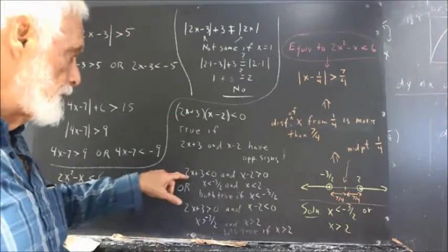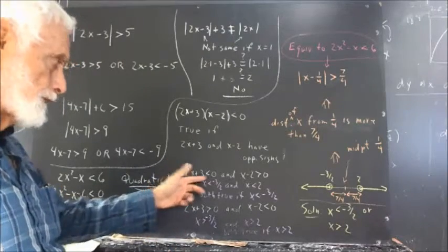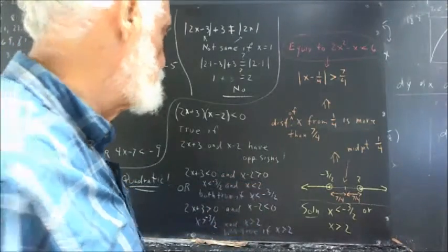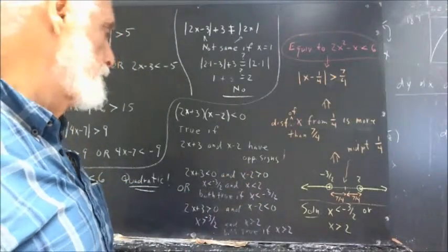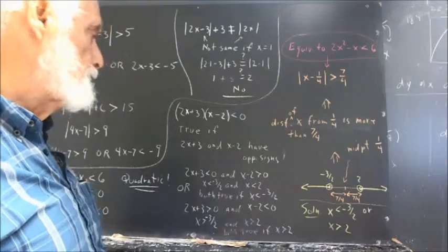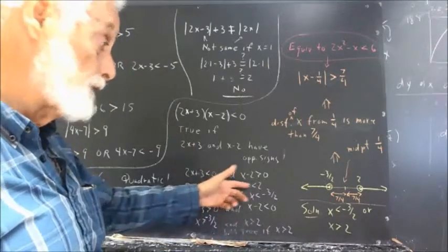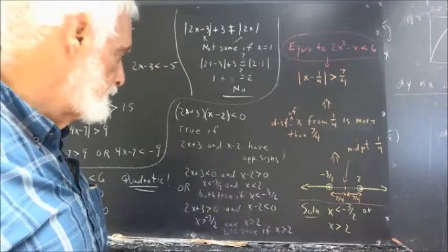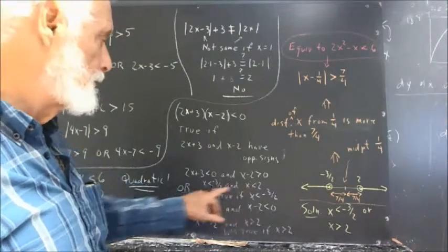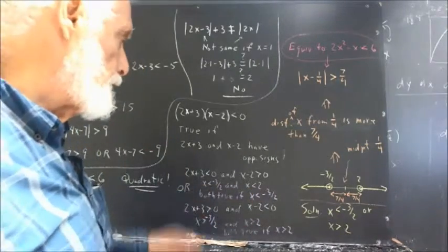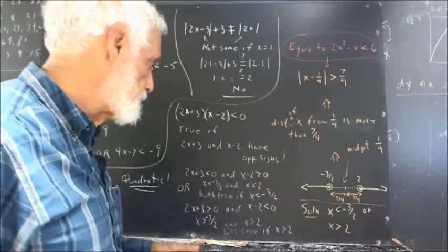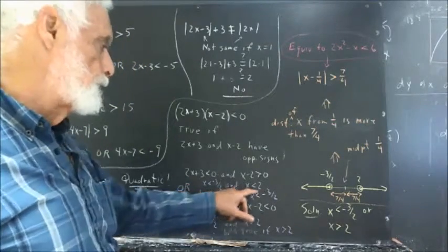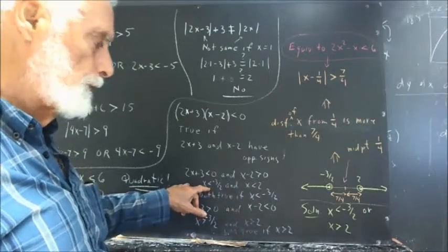In Case 1, if 2x plus 3 is less than 0, we solve to get x less than negative 3 halves. And if x minus 2 is less than 0, we get x less than 2. Both conditions must be true simultaneously. The only way both are satisfied is if x is less than the lesser of the two values, which is negative 3 halves. A number between negative 3 halves and 2 satisfies x less than 2 but not x less than negative 3 halves.